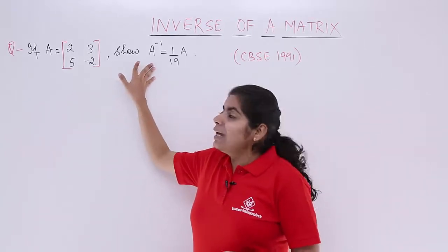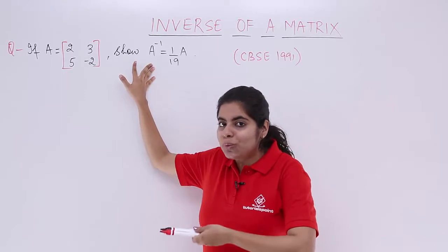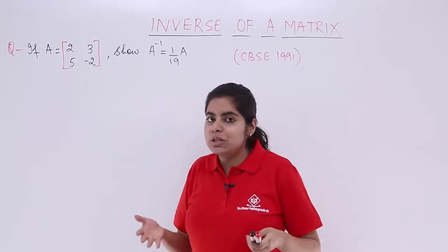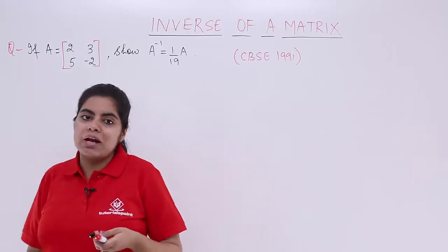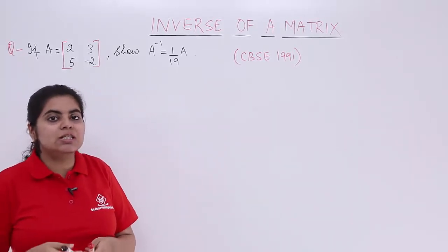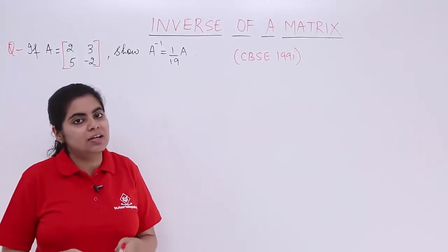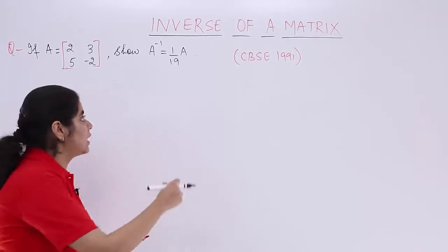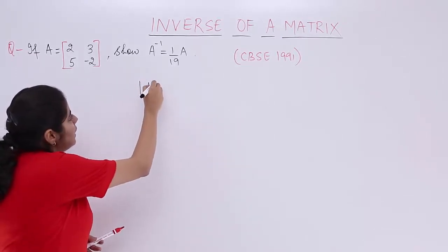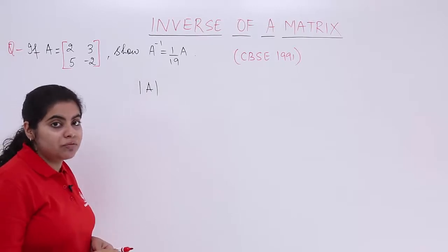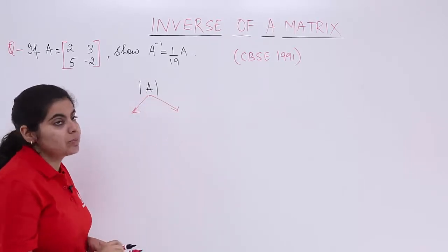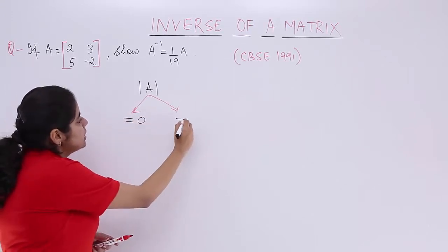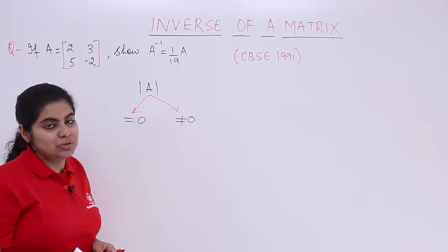When A inverse needs to be shown equal to something, first you need to find A inverse. For any given matrix, finding inverse is possible after checking a condition. You need to check what is det A, the determinant of A, because determinant of A can get two values: either it can be equal to 0 or it can be not equal to 0.